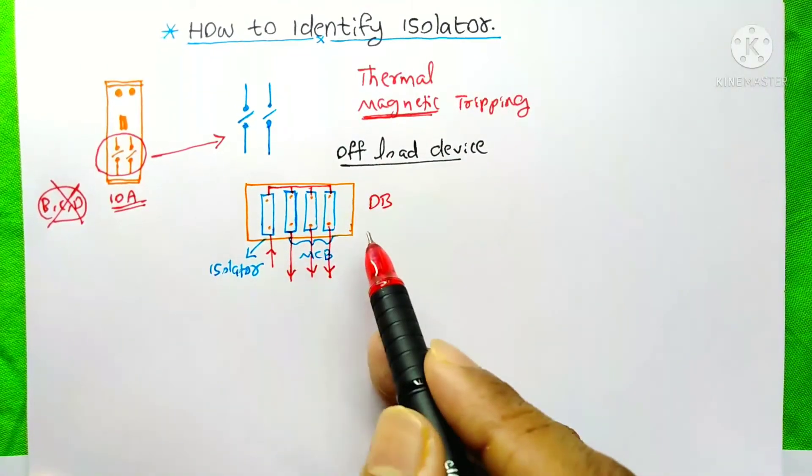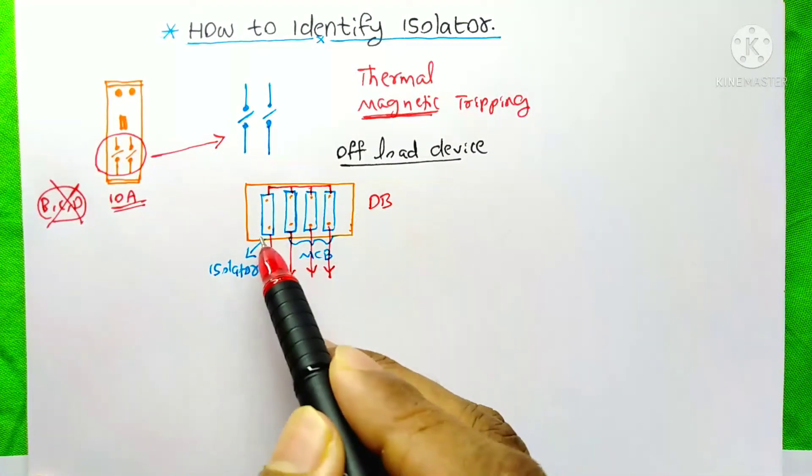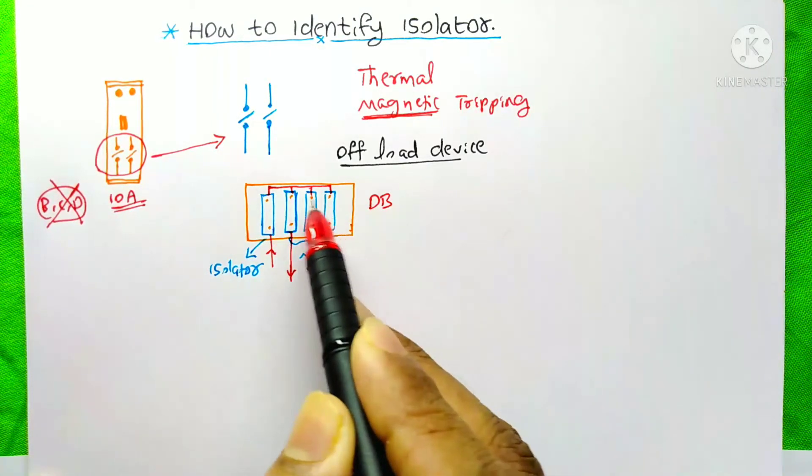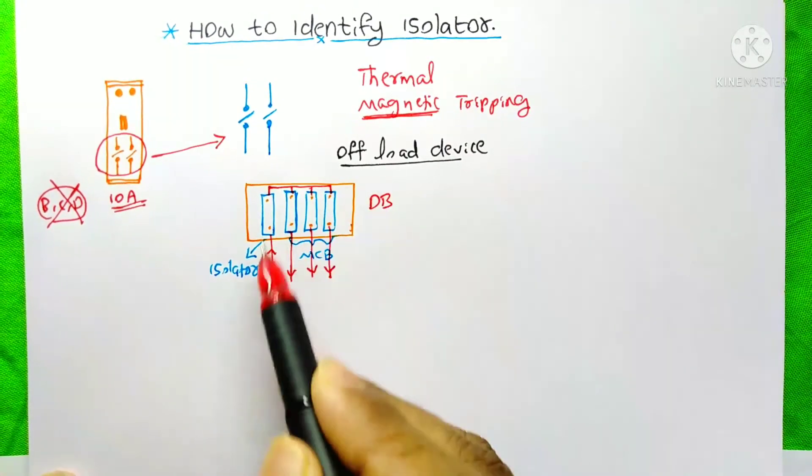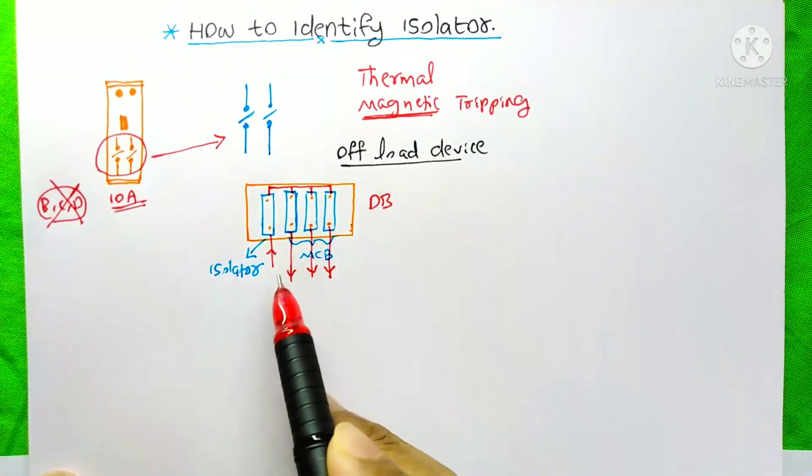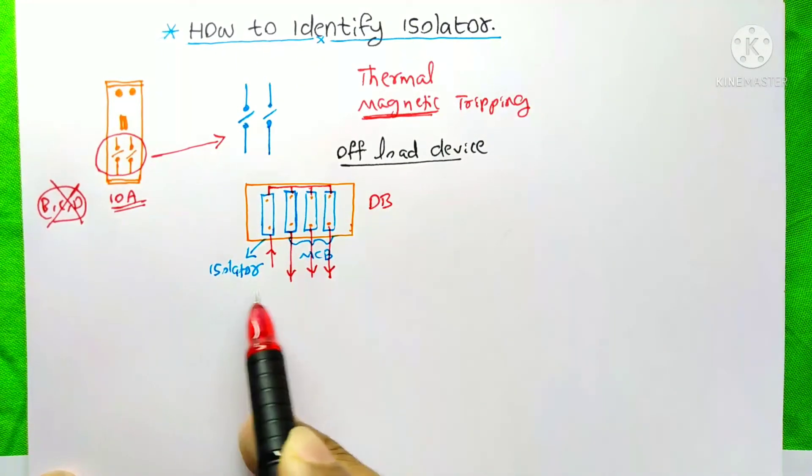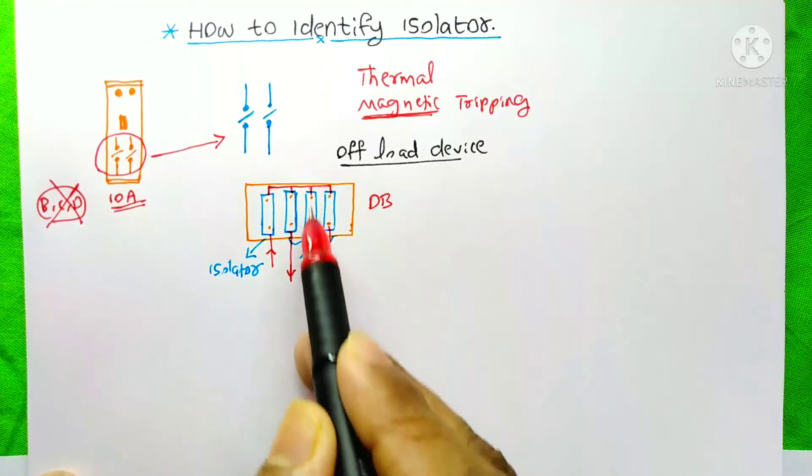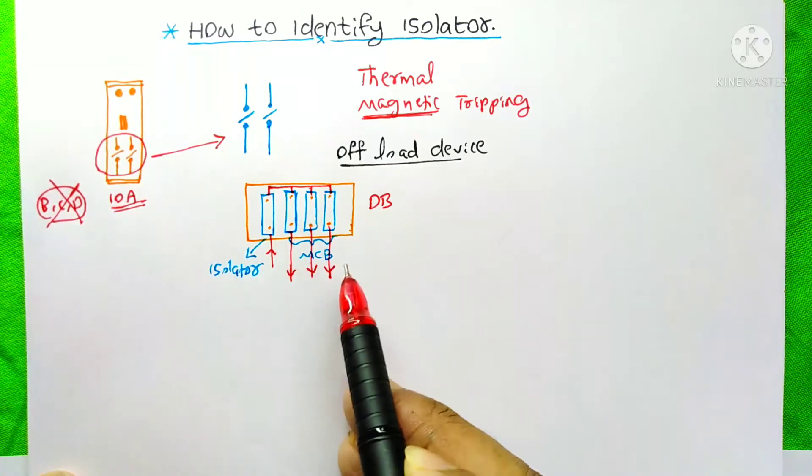See here I just showed a DB distribution board. And in this DB it is our main isolator and after that I just showed the three MCBs. If the loads are running now that means the current is passing through the circuit. And in any condition if you want to switch off this isolator, first you need to switch off all these MCBs and make sure that your loads are off.